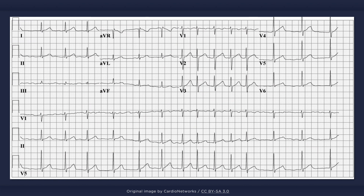In this ECG, the fibrillatory waves are not as easy to appreciate. The irregularity of the RR intervals, however, are more clearly evident. The rhythm irregularity in combination with the lack of P waves helps identify this dysrhythmia as atrial fibrillation.